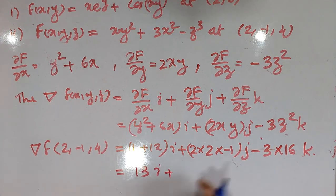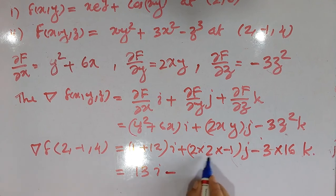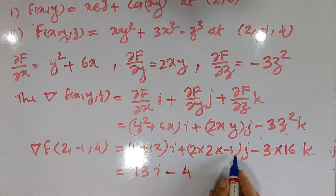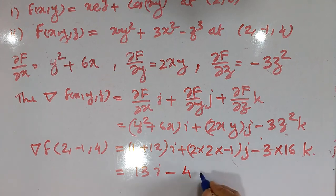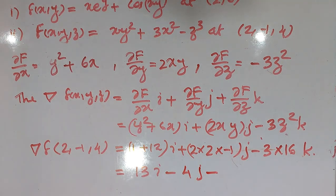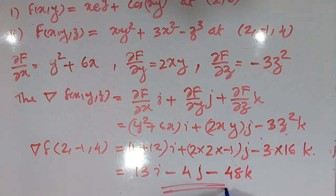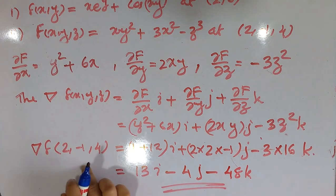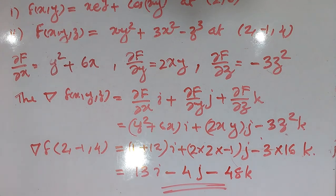Substituting the point (2, minus 1, 4): we get 13i. Then minus 2 times 2 gives minus 4, so minus 4j. And 16 times 3 equals 48, so minus 48k. Therefore del f at (2, minus 1, 4) equals 13i minus 4j minus 48k.